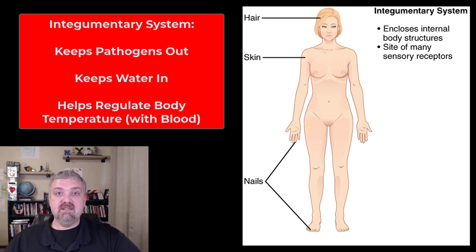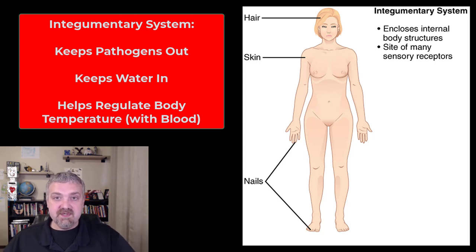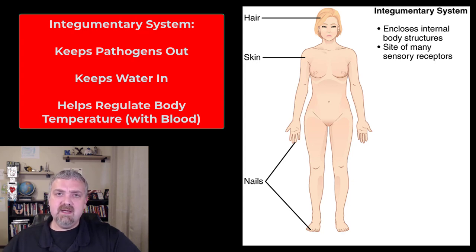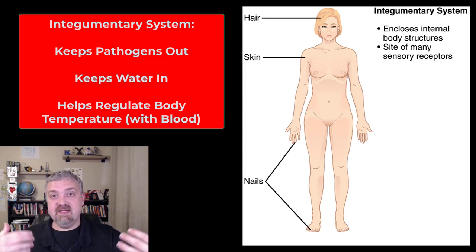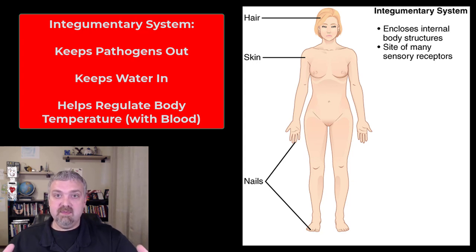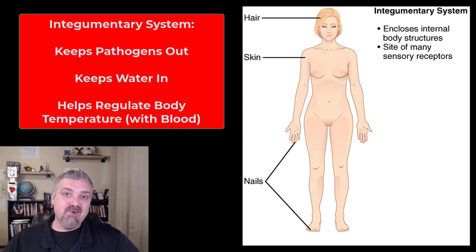The skin is also linked to your nervous system because of mechanoreceptors and thermoreceptors. Another big thing your skin does is work with your blood like a radiator system to regulate body temperature. If it's hot, warm blood rushes to your skin so evaporation and radiation can take heat away. If it's cold, warm blood rushes away from your skin to keep your core temperature elevated. That's a quick intro to the integumentary system.